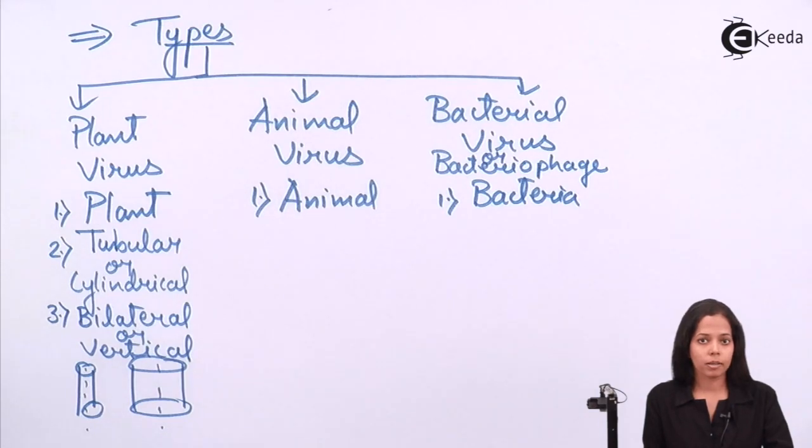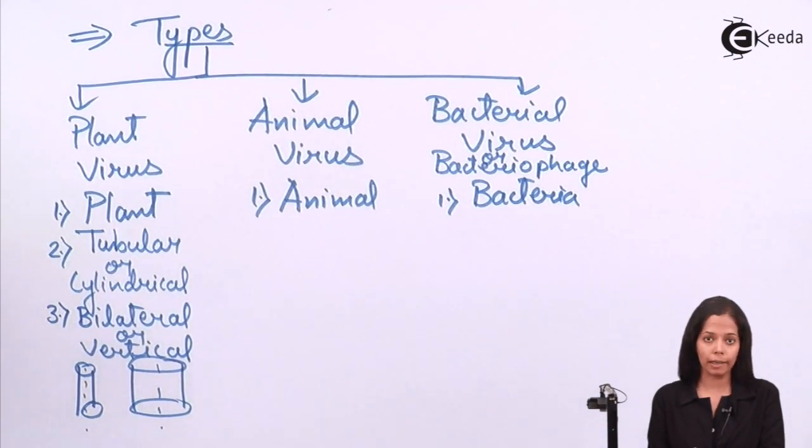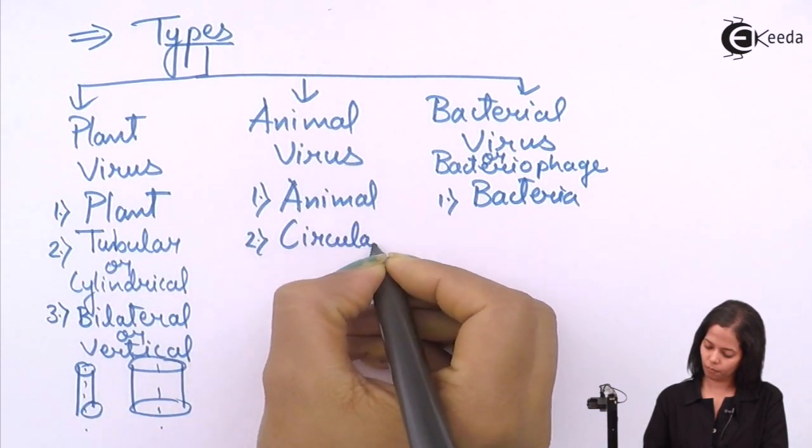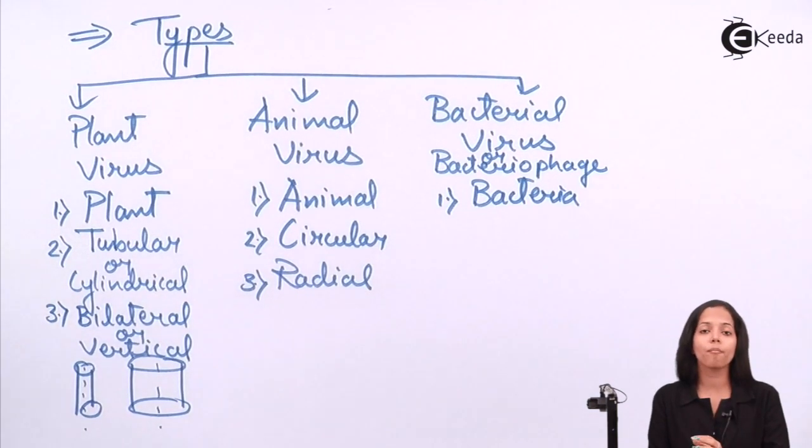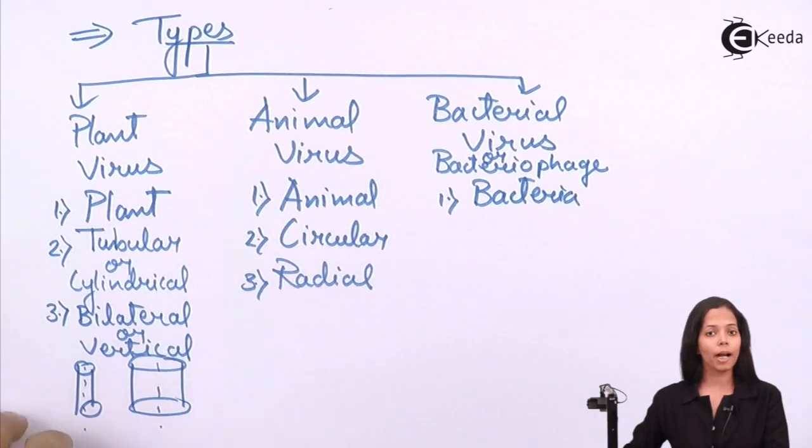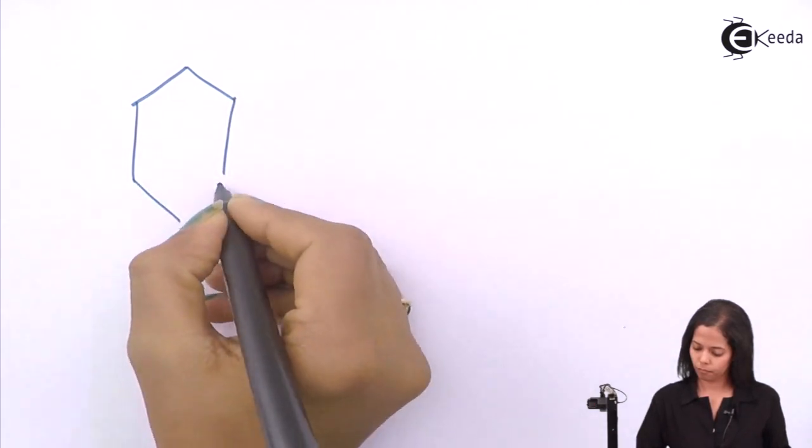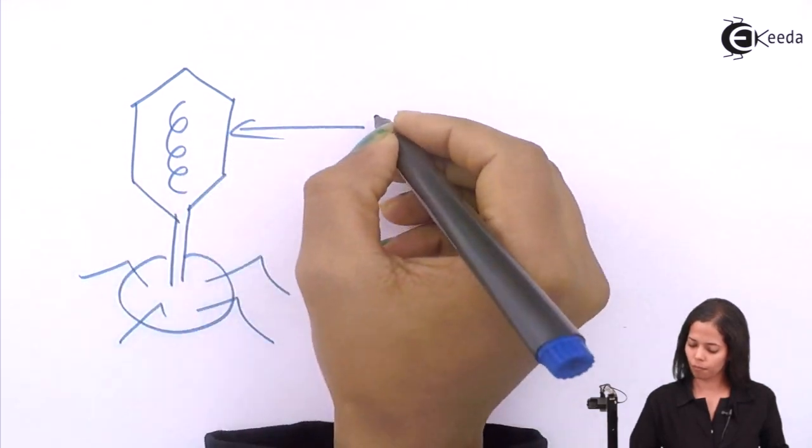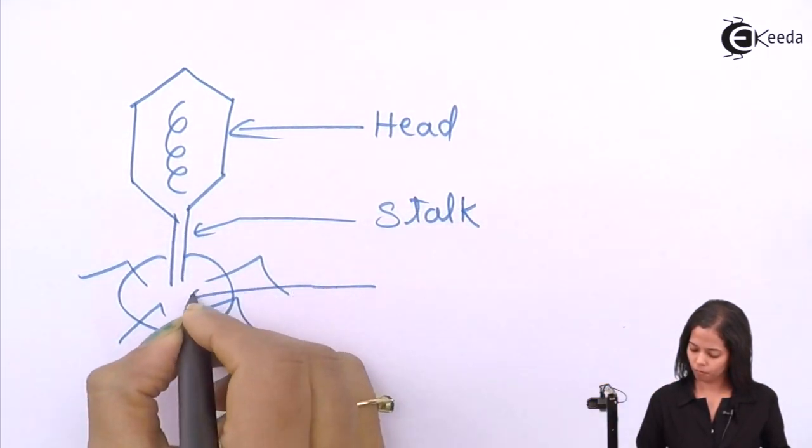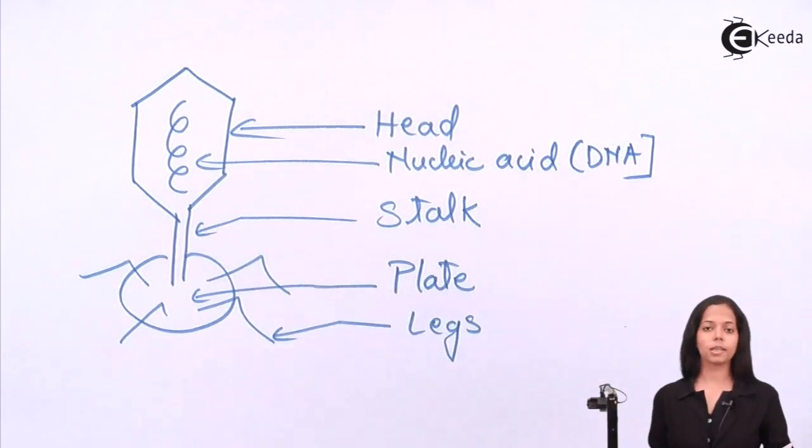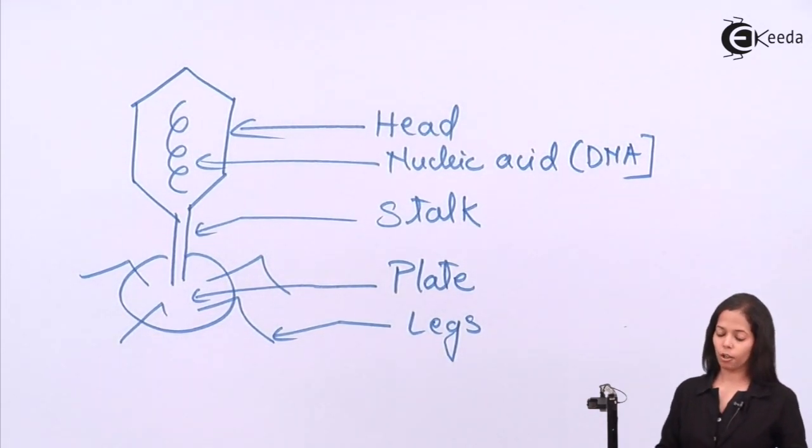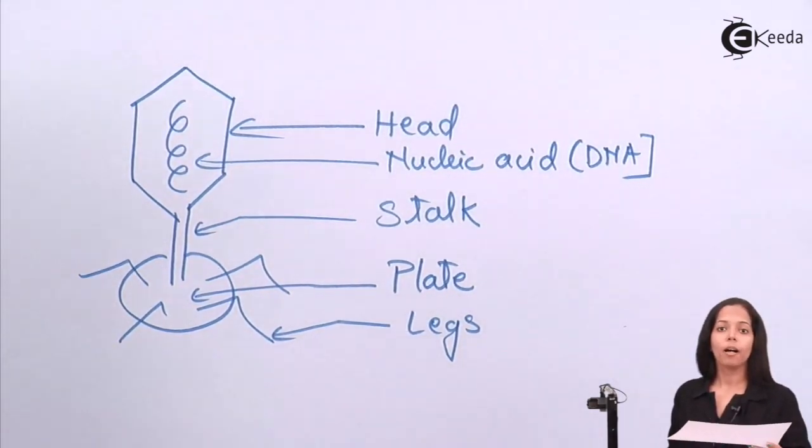Now speaking about animal virus, animal virus are generally circular or they are oval. So if anything is circular the symmetry is radial. Speaking about bacteriophage, bacteriophage is having an asymmetrical body because the shape of bacteriophage appears like tadpole. This is how bacteriophage looks. So you cannot have any symmetry for the structure. That is why they are asymmetrical.